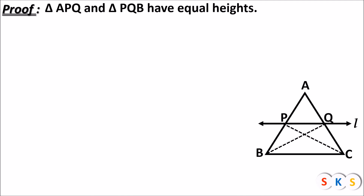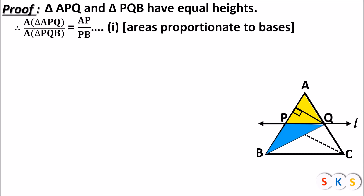Triangle APQ and triangle PBQ have equal heights. You can see the perpendicular from Q to line AP — it is the height of triangle APQ and also the height of triangle BPQ. Since the heights of these two triangles are equal, the ratio of their areas equals the ratio of their corresponding bases. So area of triangle APQ upon area of triangle PQB equals AP upon PB. This is equation one.